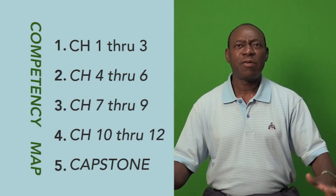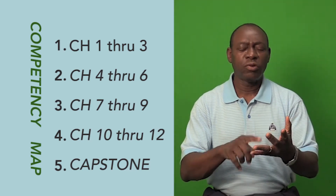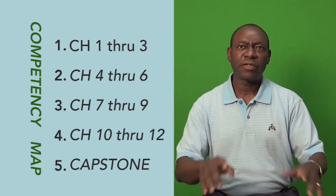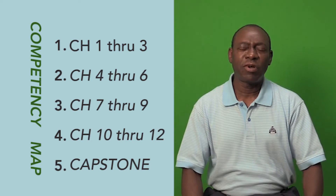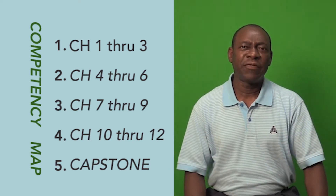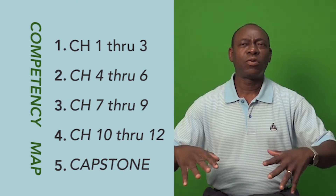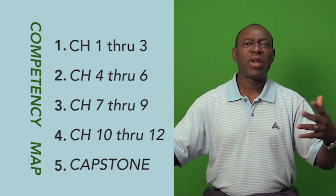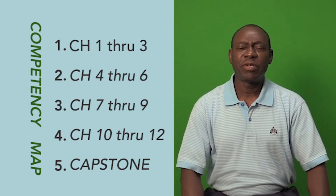There are still five competencies. Competency one covers chapters one, two, and three. Competency two covers chapters four, five, and six. Competency three covers chapters seven, eight, and nine. The last one covers chapters ten, eleven, and twelve. The fifth competency will be a capstone to prepare you for the Net+ exam, with some practice exams that draw from different parts of the other competencies.